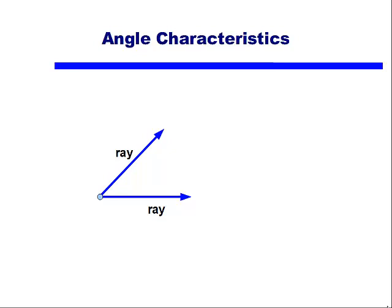A ray is a part of a line that starts at a point and then goes on infinitely in one direction. Where those two rays meet is called the vertex.